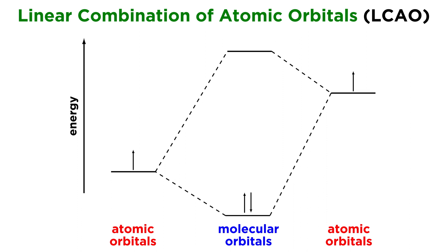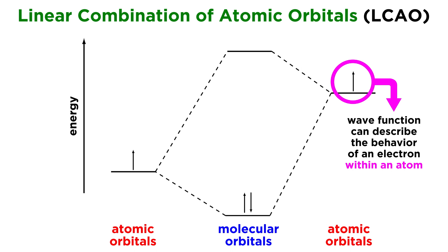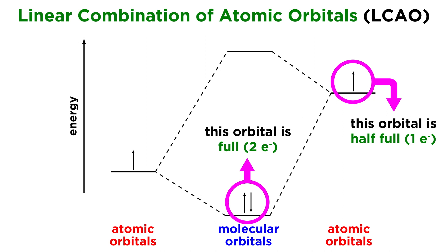This is due to a process called the linear combination of atomic orbitals. In the Modern Physics course, we talked a little bit about the wave function, and molecular orbitals are combinations of atomic orbital wave functions. Just as the wave function describes the behavior of an electron within an atom, molecular orbitals describe the behavior of an electron within a molecule. And just like atomic orbitals, they are filled when they contain two electrons of opposite spin.